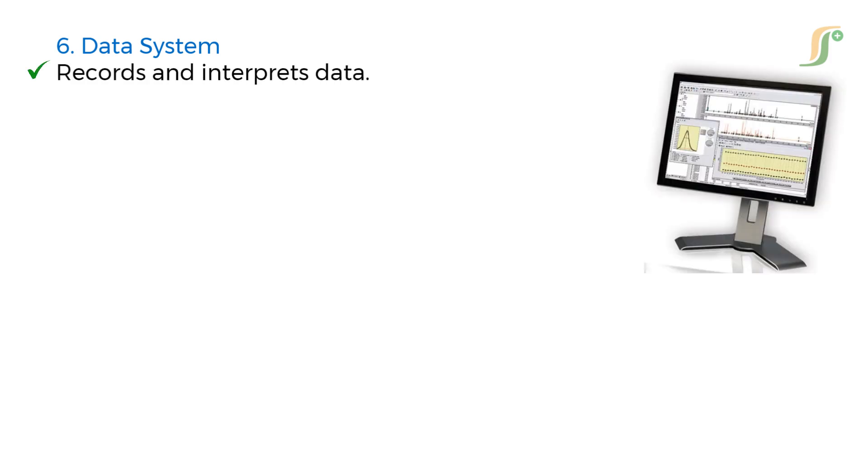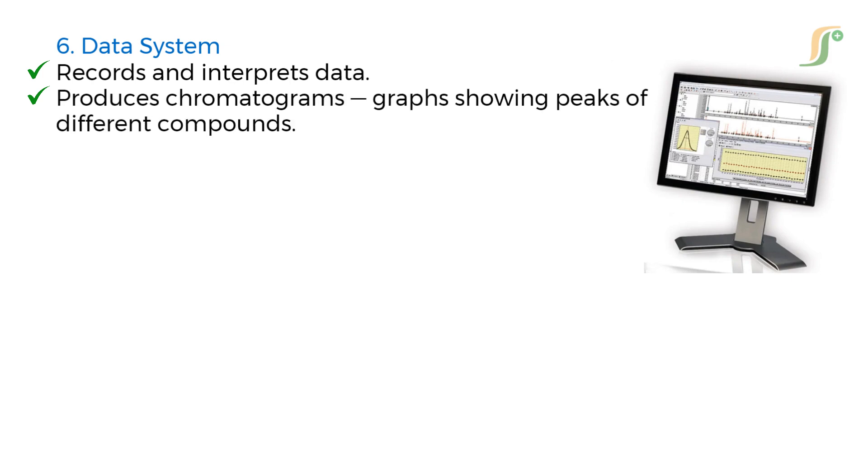Sixth component is data system. It records and interprets data and produces chromatograms showing peaks of different compounds. Peak retention time is identification and peak area or height is quantification.